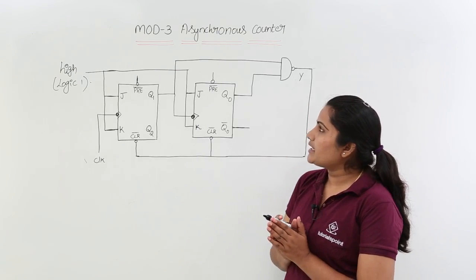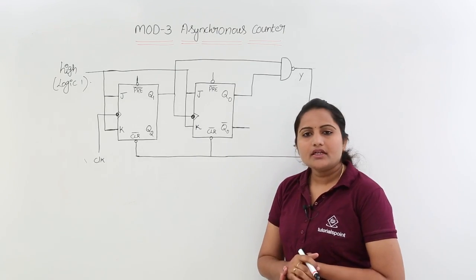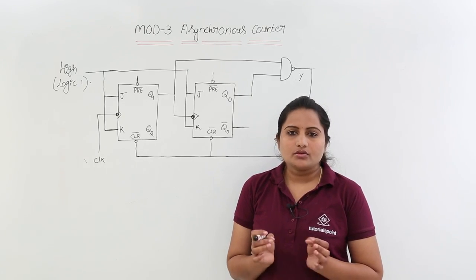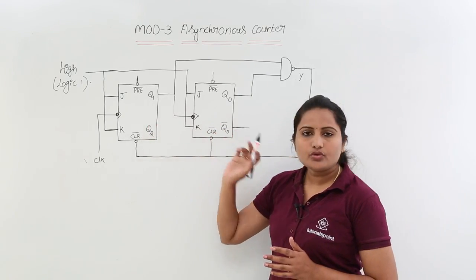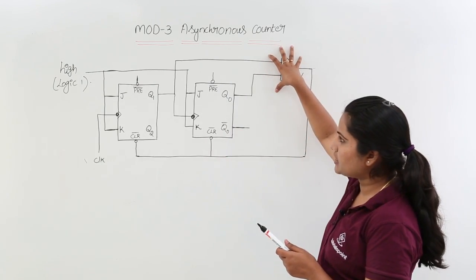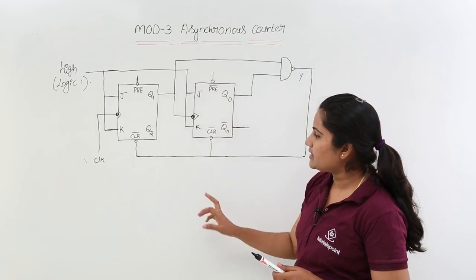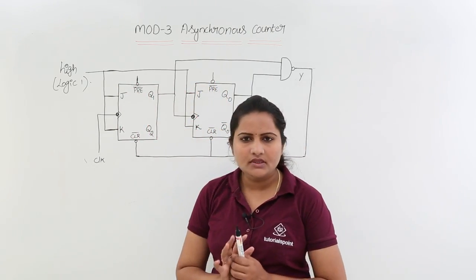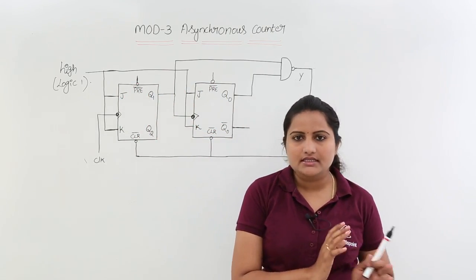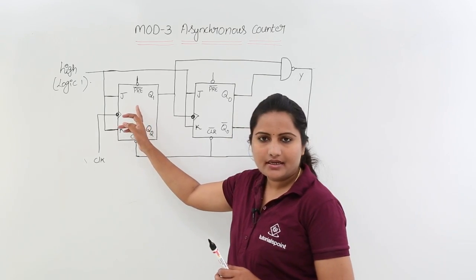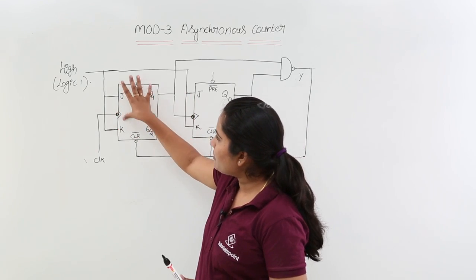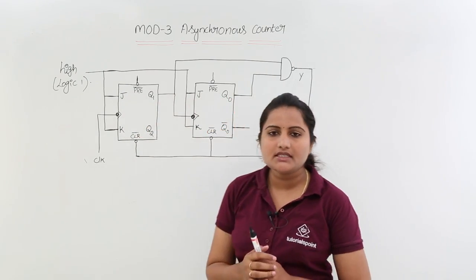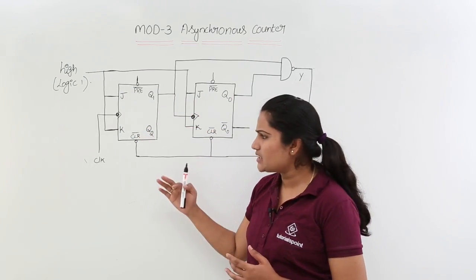For this mod-3 asynchronous counter, if you take two flip-flops and forget about the NAND gate connection and clear and preset connections, what you observe is simply an up-counter — an asynchronous ripple up-counter we already discussed in previous classes. Here you can observe logic 1 for both J and K of each flip-flop, meaning it will give the toggle condition of a JK flip-flop, just waiting for the clock.